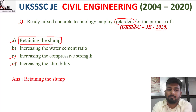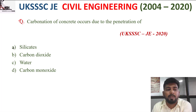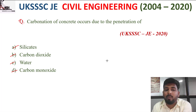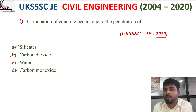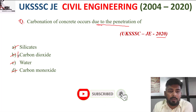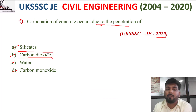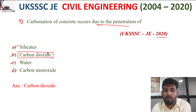Next question: carbonation of concrete occurs due to penetration of — option A silicate, B carbon dioxide, C water, D carbon monoxide. Carbonation of concrete occurs due to the penetration of carbon dioxide. So the correct option is B, carbon dioxide.